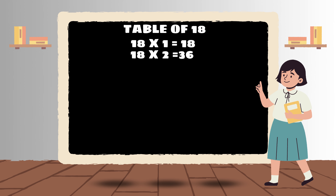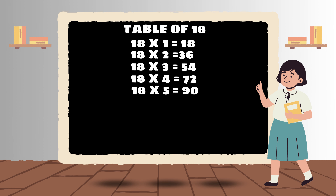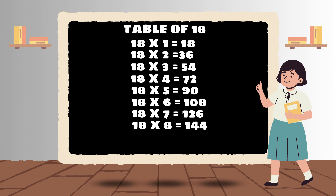18 times 1 is 18. 18 times 2 is 36. 18 times 3 is 54. 18 times 4 is 72. 18 times 5 is 90. 18 times 6 is 108. 18 times 7 is 126. 18 times 8 is 144. 18 times 9 is 162. 18 times 10 is 180.